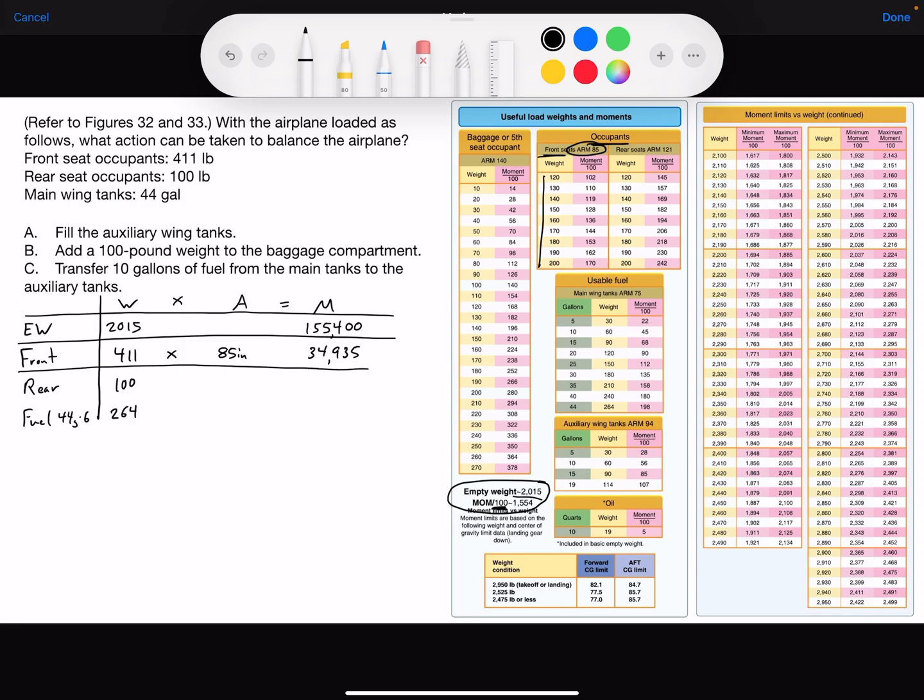For the rear, we have 100 pounds, occupants, rear seat. The weight of 100 is not listed, but we have the arm of 121. Multiply by 121 inches and it gives us 12,100.